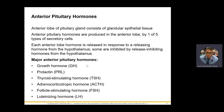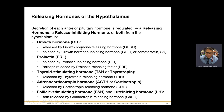Anterior pituitary: growth hormone is GH, prolactin is PRL — these are universal abbreviations you'll see in most textbooks. Thyroid-stimulating hormone, adrenocorticotrophic hormone — no one calls it that, everyone calls it ACTH. And you have FSH and LH. These are the major, more common ones.